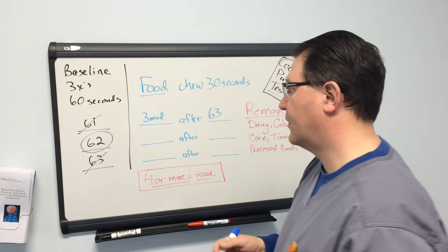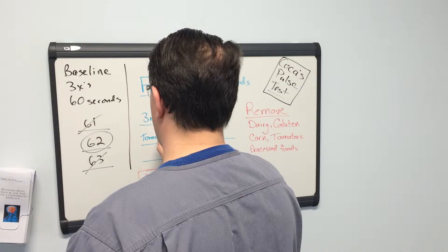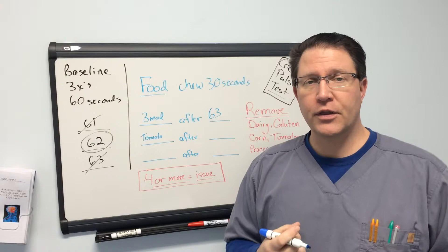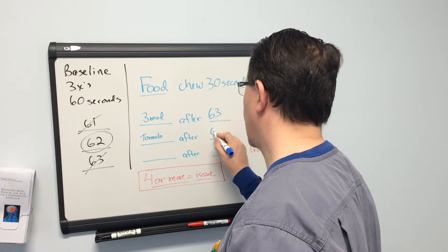Spit that out, don't swallow it, spit that out, rinse your mouth out with water, and let's come to the next food. And let's say maybe we try tomatoes. And you're going to take a piece of tomato, and you're going to chew that up, keep that in there for a good 30 seconds, and you're going to check your pulse rate again. And let's say that's coming in at 66.